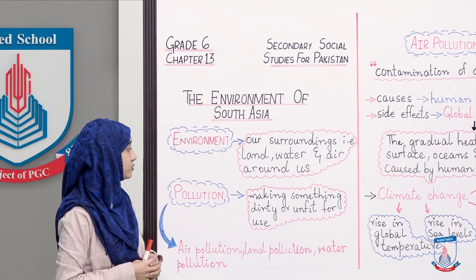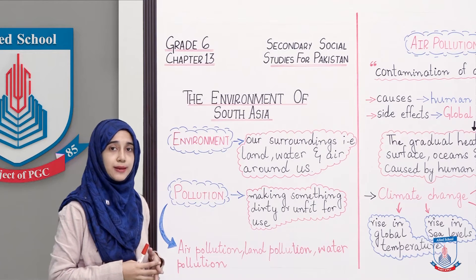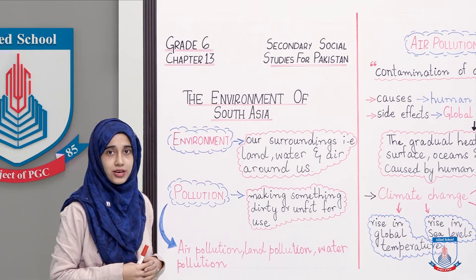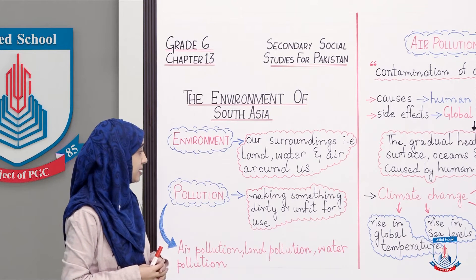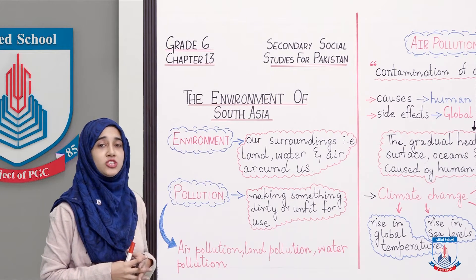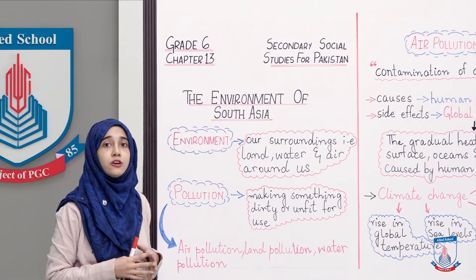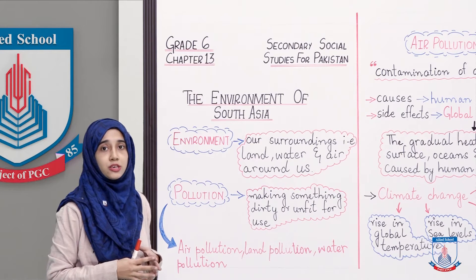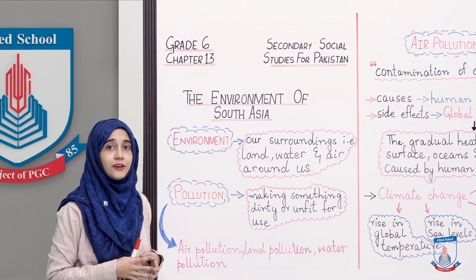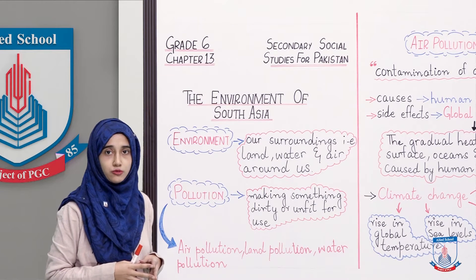We are going to discuss in this chapter different forms of pollution. But first, we need to see what pollution means. Making something dirty or unfit for use — when something becomes unfit for use, we call it polluted. So if anything is polluted, that thing has become unfit or dirty for use.